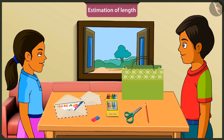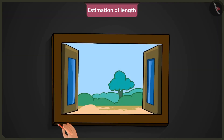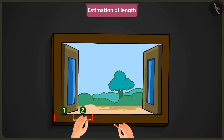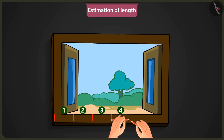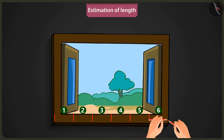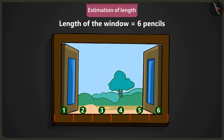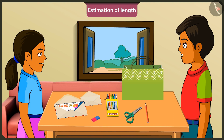Yes, Mintu. Now consider this pencil as a unit, and use this pencil to measure the length of the window. One, two, three, four, five, and six — the length of this window is six pencils long. So Mintu, like this, we can consider the measure of a smaller object as a unit to estimate the length of a bigger object.